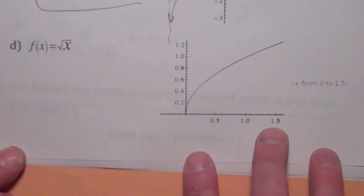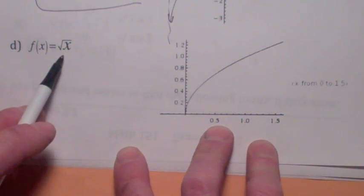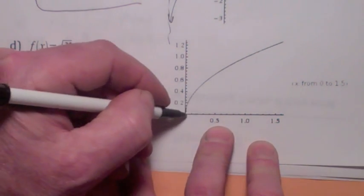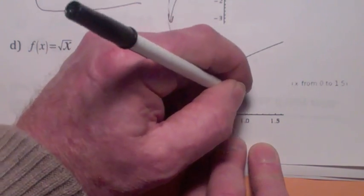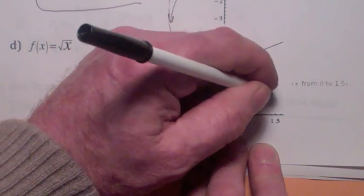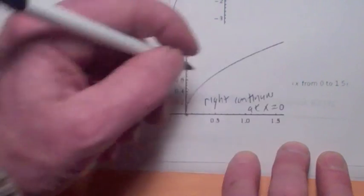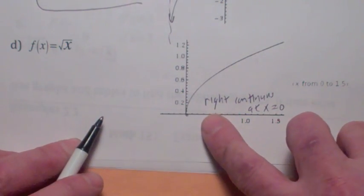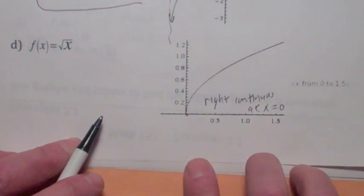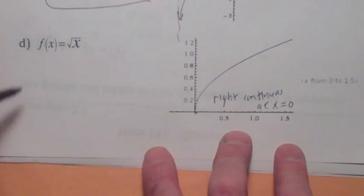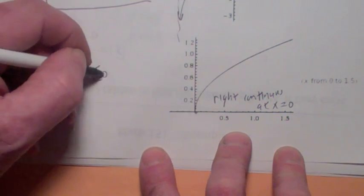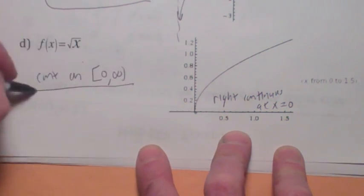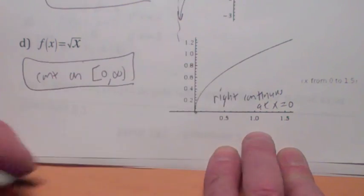Look at the square root of x — that's an interesting one. This function is continuous. At 0 we say that it is continuous at 0; technically we call it right-continuous at x equals 0. The reason we say right-continuous is that the limit only exists from the right and not the left, because it's not even defined on the left side. As a convention, we say it's continuous on its domain, the closed interval 0 to infinity, with the convention that it's right-continuous at x equals 0.